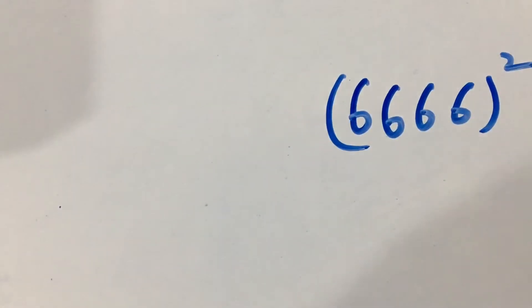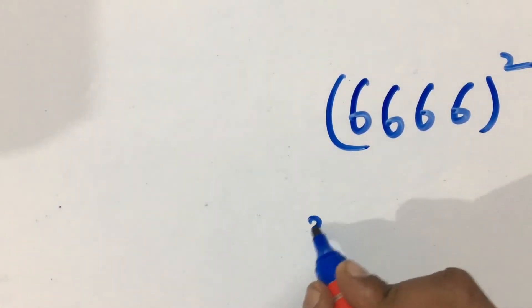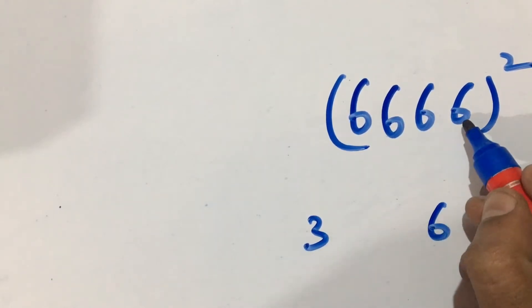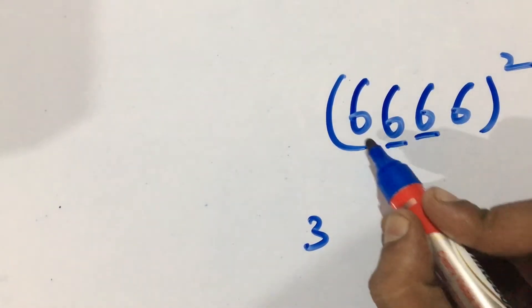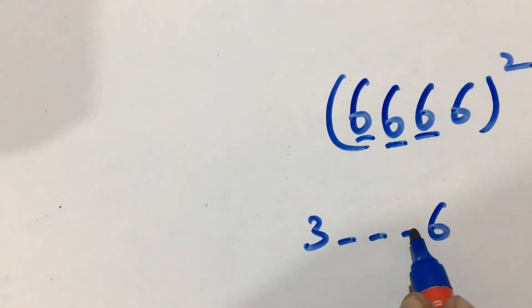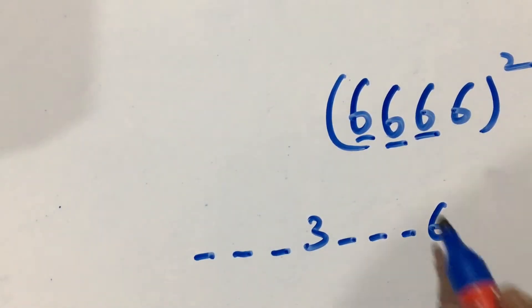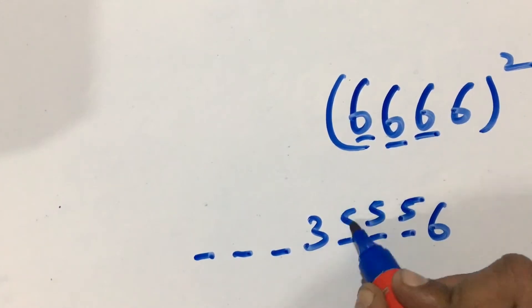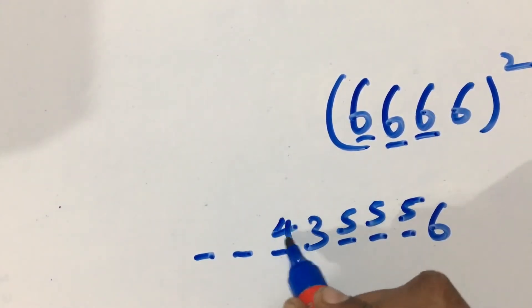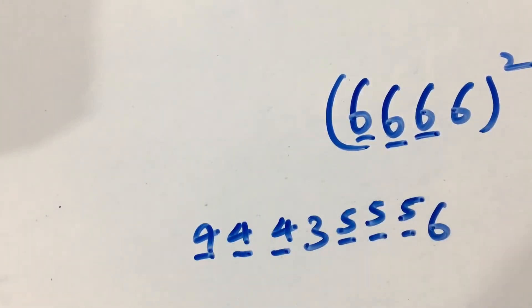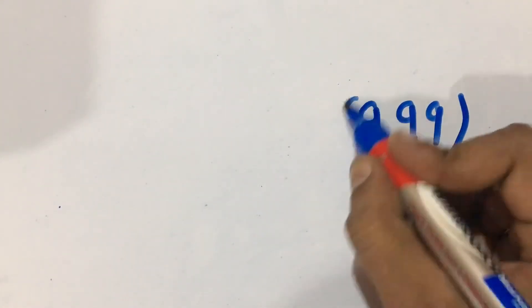Let's take another example: 66666 squared. I know 36. I've used this 6 — remaining digits: one, two, three, so one, two, three, one, two, three. Six minus one is 5, 5, 5, 5; three plus one is 4, 4, 4. See guys, how simple it is. Similarly let's do it for 9 — 999 squared.